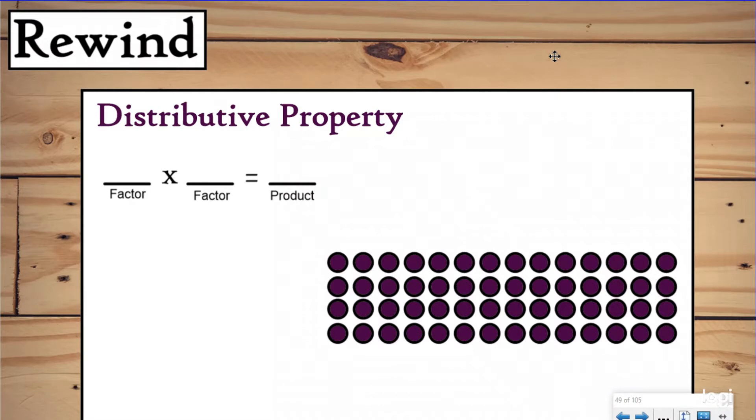But first we need to rewind all the way back to the distributive property of multiplication. At some point in your life, you'd learned about the distributive property. So here we have an array. And I know that I have 14 groups of four.